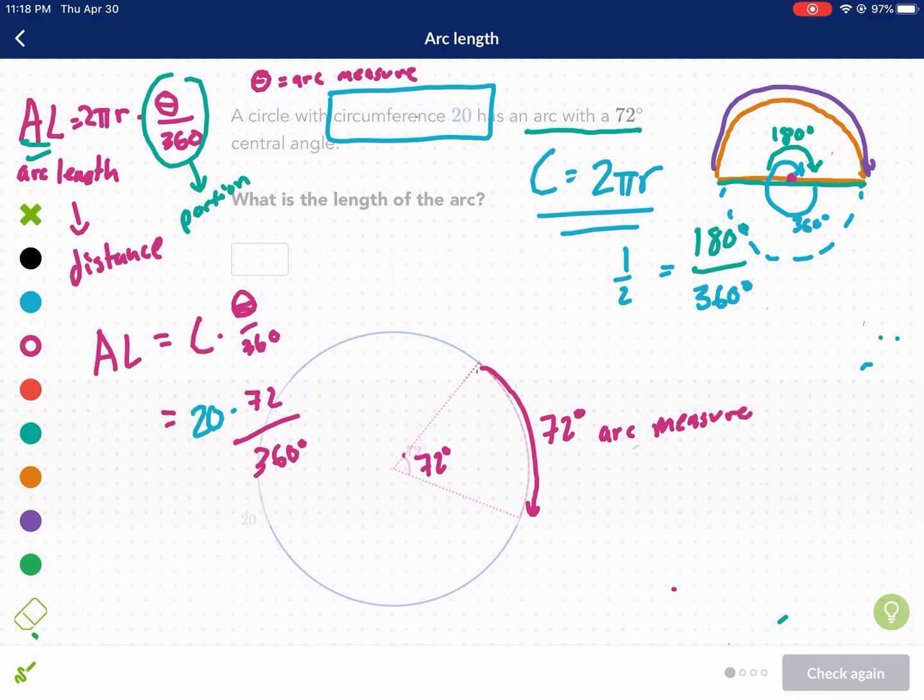So I'm going to get my calculator. I do 20 times 72, and then I divide that by 360. If you want, you can do 72 divided by 360 first. And this gives me four. But if you wanted to, you could do 72 divided by 360, just to see that this gives you one over five, or 0.2. So this portion of the circle, this arc measure, is one-fifth of the whole circle. The circumference, or this portion of the arc length is going to be one-fifth of the entire circumference. So let's go ahead and put four. That was our answer there.